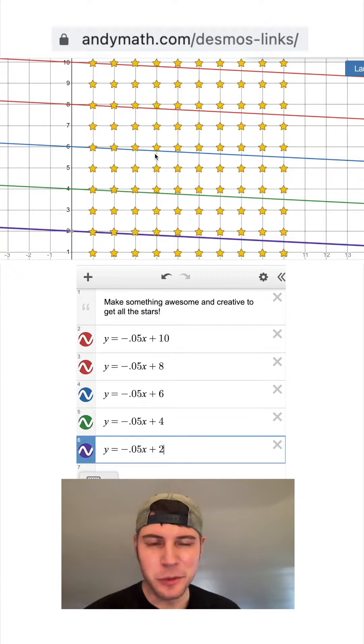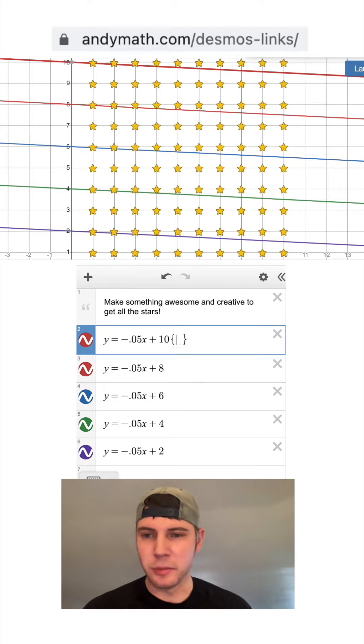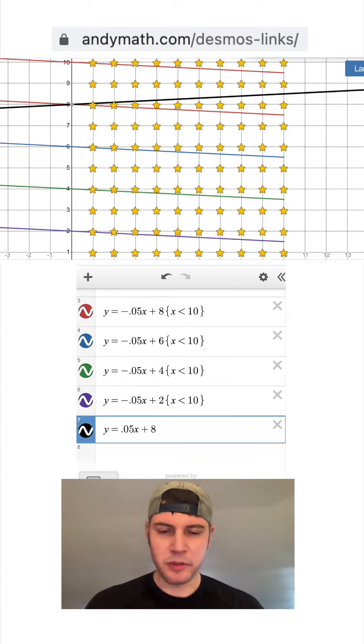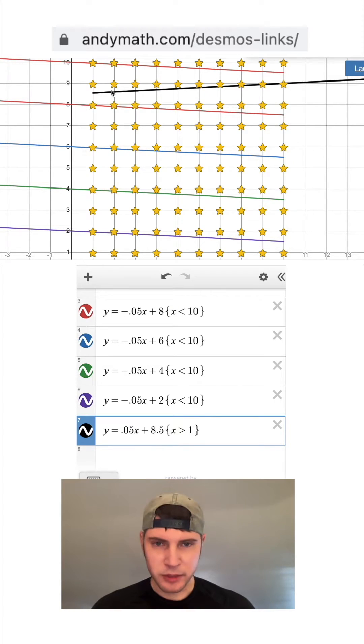Now we have all those, and I want to cut them at around x equals 10. So I'm going to put a squiggle marks and say x less than 10. Now let's go the other direction. Let's go the same slope, but positive. Say y equals 0.05x plus 8.5. That should do it. And let's cut this one at 1. So now we can see that one's cut right there. And I'll just make more of these.